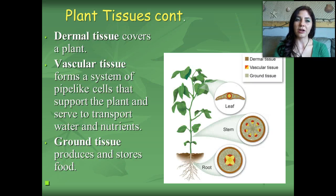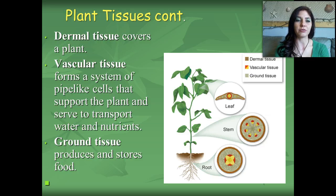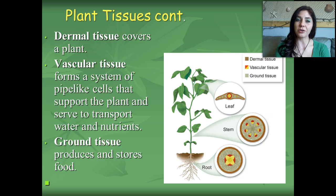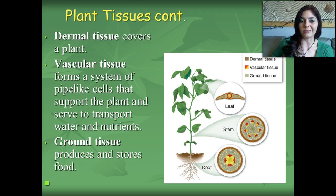Dermal tissue covers the plant, just like our skin or our epidermis covers us. Vascular tissue forms a system of pipe-like cells that support the plant and serve to transport water and nutrients. And ground tissue produces and stores food. The roots of plants are very rich in starch — think about a potato. That's the root of the plant, and that's how plants store their food for later.